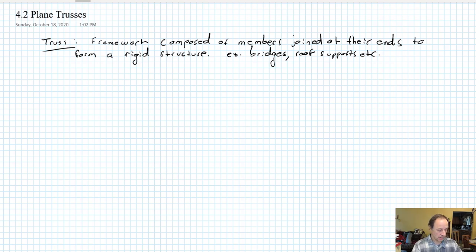Hello my fellow engineers, today we're going to start talking about trusses. It's sort of our beginning of applying those principles that we've been learning to some more realistic structures. So a truss is a framework composed of members that are joined at their ends to form a rigid structure. So bridges, roofs, supports—they're all over the place.